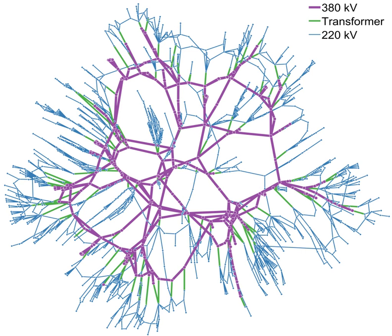It consists of generating stations that produce electrical power, high-voltage transmission lines that carry power from distant sources to demand centers, and distribution lines that connect individual customers. Power stations may be located near a fuel source, at a dam site, to take advantage of renewable energy sources, and are often located away from heavily populated areas.